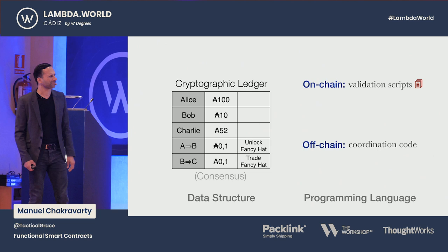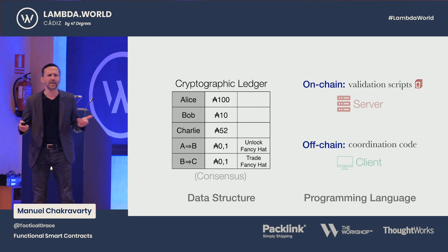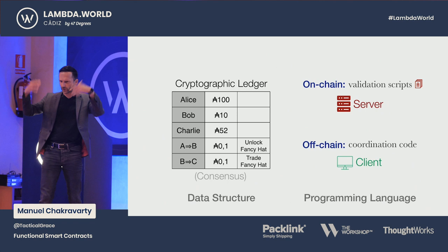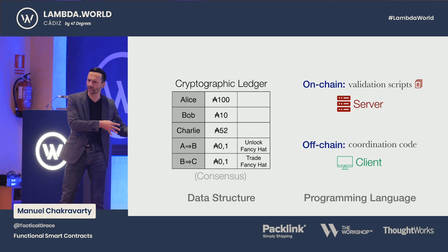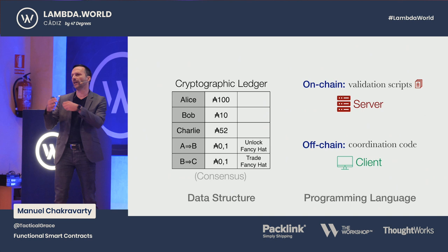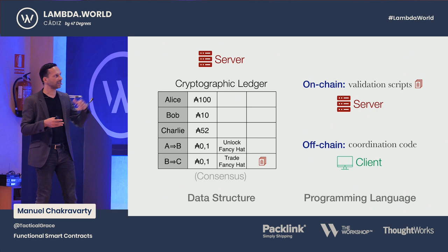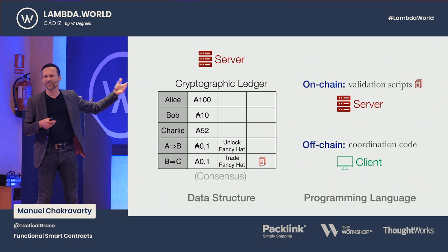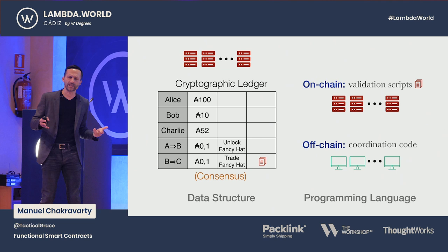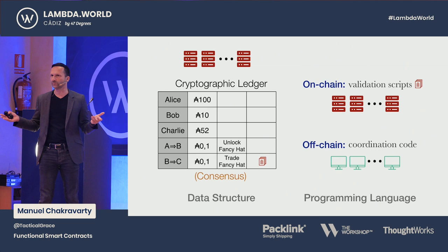We need a programming language in two different places. We have these validation scripts which run on the server which maintains the cryptographic ledger, and then we have other code on clients — on the individual users associated with the wallets and any other client code. We actually have got many of everything, and the servers need to get access to these on-chain validation codes, so this has to be somehow stored on the blockchain as well. And with many servers and many clients, we are actually in a large-scale distributed concurrent system situation.